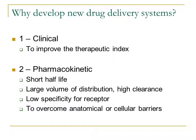Why do we need to develop new drug delivery systems? First of all, in the clinic we want to improve the therapeutic index so that drugs are not too toxic and that they actually work to cure a disease. In terms of pharmacokinetics, a drug may have a short half-life, meaning it passes through the body quickly, or have a large volume of distribution and high clearance. This relates to metabolism and how quickly the drug is excreted, or whether the drug doesn't have a strong response at the receptor, or fails to overcome anatomical or cellular barriers within the body.